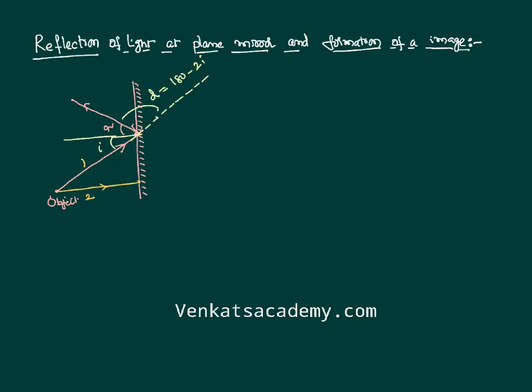It is very clear that in the case of the second light ray, the angle of incidence is 0 — it is striking normally. Once the angle of incidence is 0, the angle of reflection is 0. Therefore, the light ray is going to go back into the same medium. The first light ray is going like this after reflection, and the second light ray is going like this after reflection.